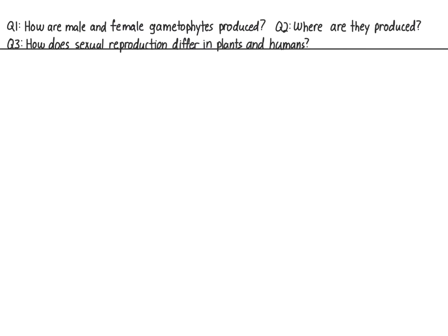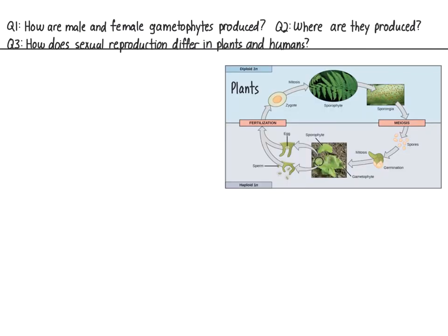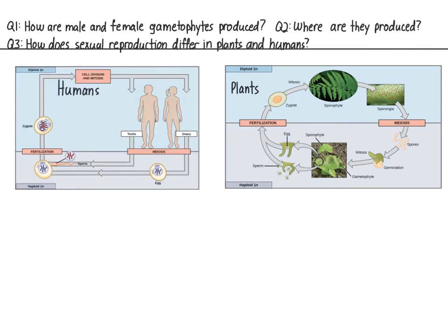To understand sex in plants, let's start by reviewing how the life cycle of plants differs from that of humans and fungi. Humans are diploid pretty much throughout our entire life cycle. The only haploid cells we make, through meiosis, are the gametes — sperm and egg — which complete sexual reproduction during fertilization. The only form that humans take is that of a multicellular diploid.